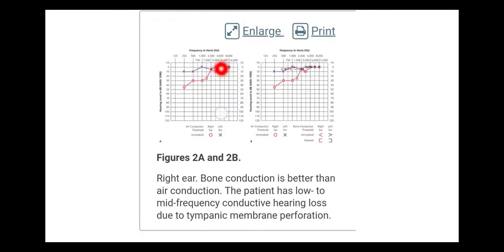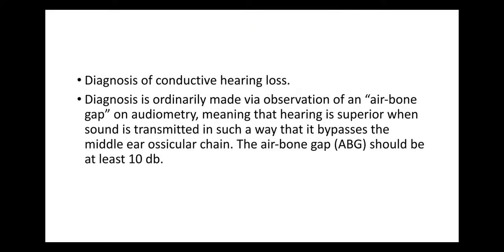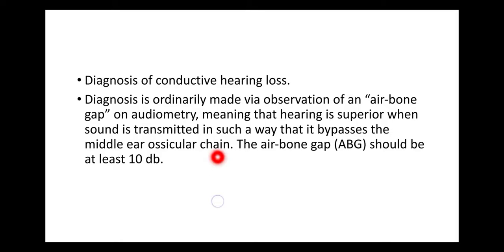Bone conduction is better than air conduction. The patient has a low to mid frequency conductive hearing loss due to tympanic membrane perforation. Diagnosis of conductive loss is ordinarily made via observation of an air-bone gap on audiometry, meaning that hearing is superior when sound is transmitted in such a way that it bypasses the middle ear ossicular chain. The air-bone gap should be at least 10 decibels for us to say that there is a conductive component.